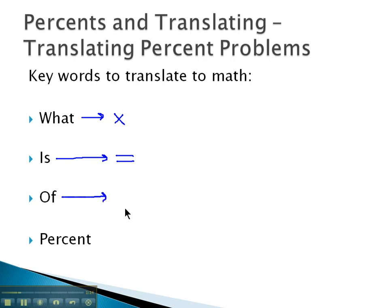The next key word is of. Of will become multiplication—it's a multiplication problem. And finally, percent, per 100 as a decimal, 0.01.